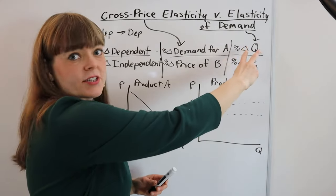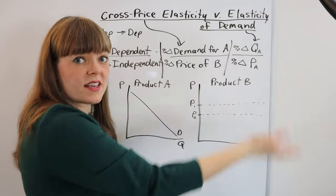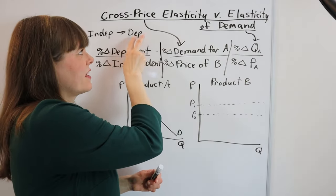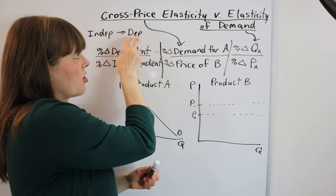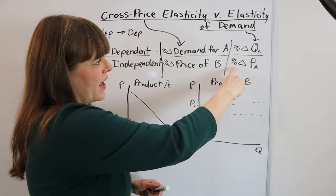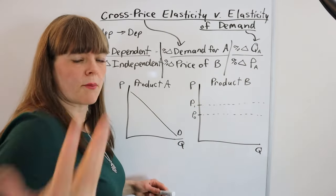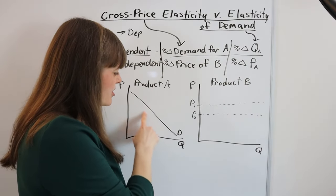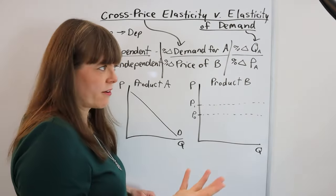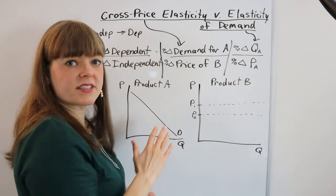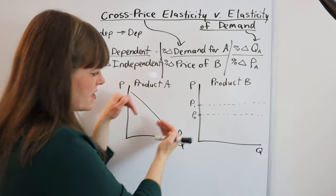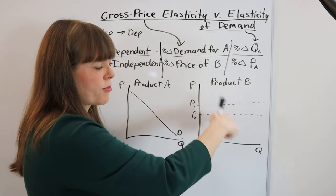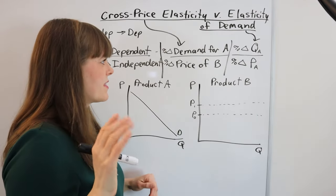Elasticity of demand is percent change in quantity that people purchase — that's the dependent variable — and people change the quantity they purchase depending on the price. So the price causes the quantity, and percent change in price goes in the denominator. The key thing with elasticity of demand is that it measures the shape of a demand curve, whereas cross-price elasticity measures how much the demand curve moves in or out in response to some other product having a change in price.